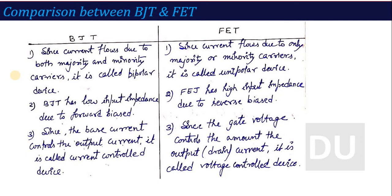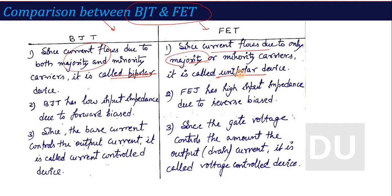The next and very important topic is the comparison between BJT and FET. FET is a three-terminal device and BJT is also a three-terminal device. When writing differences, it is better to use a table format rather than paragraph form, as it is more attractive and organized. The first difference is that BJT is bipolar — both types of charge carriers contribute to current flow — whereas in FET, current flows due to majority charge carriers, which is why it is called unipolar.